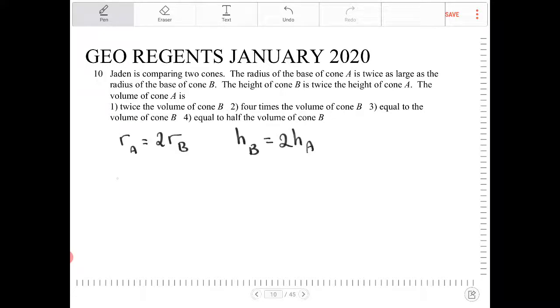And recognizing that the volume of A is equal to one-third pi RA squared times HA. And the volume of B is one-third pi times RB squared HB. I forgot a square there.